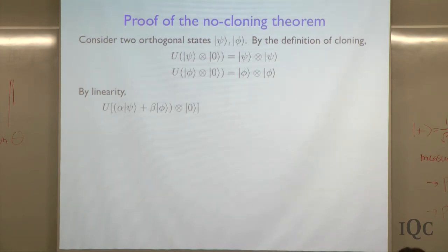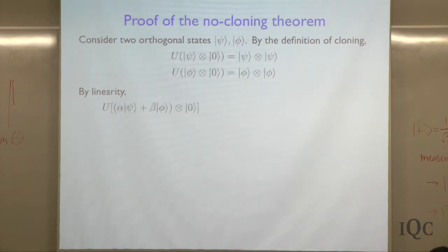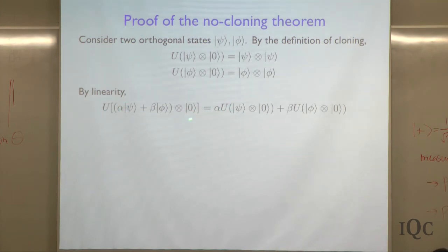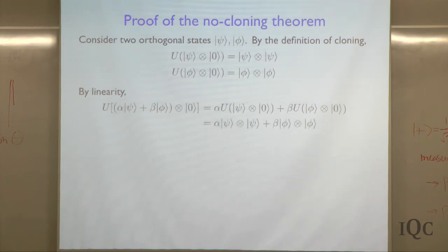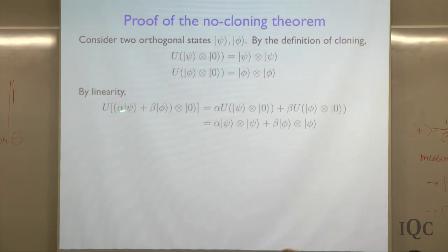By linearity, suppose we act with this unitary transformation on the state alpha psi plus beta phi, where alpha and beta are just some complex numbers. Because of the superposition principle, this is a valid quantum state for any alpha and beta subject to the normalization condition — alpha squared plus beta squared equals one. So by linearity, let's evaluate what happens if we try to clone this superposition of psi and phi. Because U is a linear transformation, this is the same as alpha times U acting on psi tensor zero plus beta times U acting on phi tensor zero. U acting on psi tensor zero gives psi tensor psi, and U acting on phi tensor zero gives phi tensor phi. So this is the output of the quantum cloner if we try to clone this superposition.